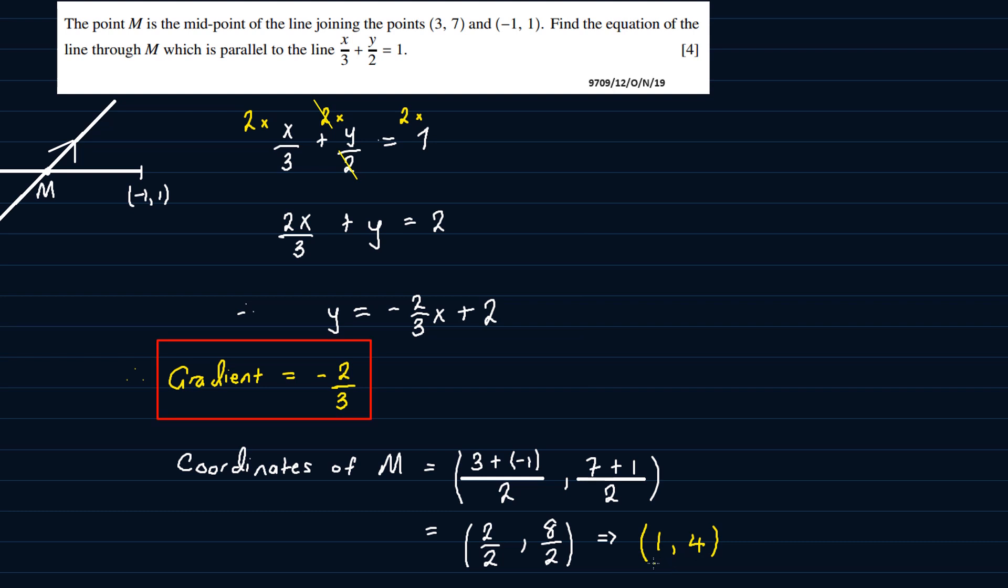So now that we have the gradient of the line and a point on the line, we can now work out the equation of the line. So we are going to use y - y₁ = m(x - x₁).